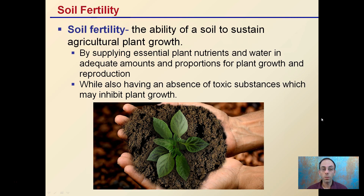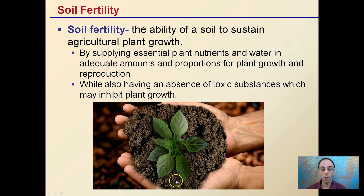The definition of soil fertility is the ability of a soil to sustain agricultural plant growth. This is by supplying essential plant nutrients and water to allow not only the plant to grow, but also reach reproduction and reach its full life cycle. This has to occur also in the absence of toxic substances which may inhibit plant growth. So the higher a soil is in soil fertility, not only is it allowing for plant growth and reproduction, but there's also an absence of harmful substances.